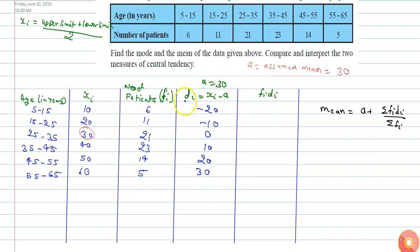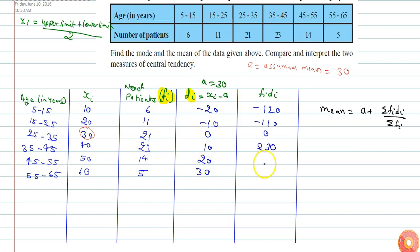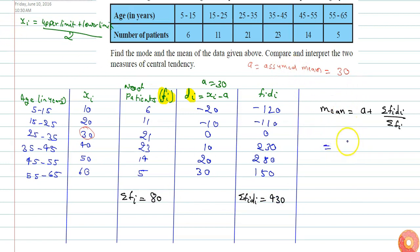We shall get the product of each fi and di. So the fi·di products are: 6 times minus 20 equals minus 120, then minus 110, then 0, then 280, and then 150. Now we can calculate the summation of fi and summation of fi·di. Summation of fi will be the sum of all fi, and summation of fi·di will be the sum of all fi·di. Summation fi equals 80 and summation fi·di equals 430.